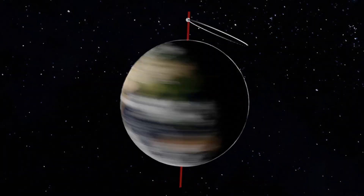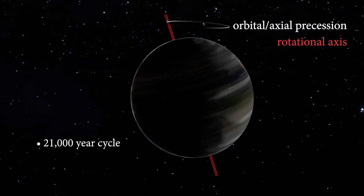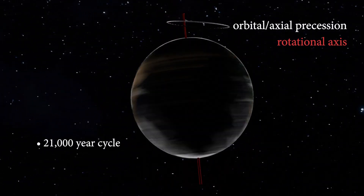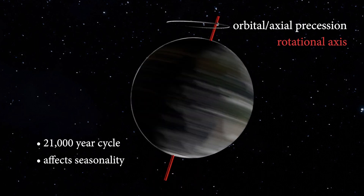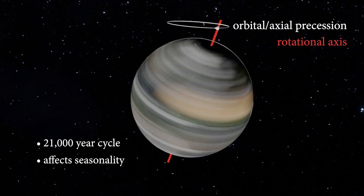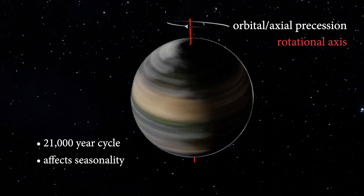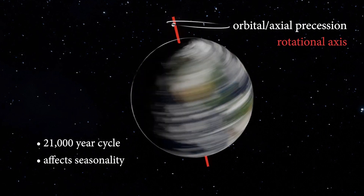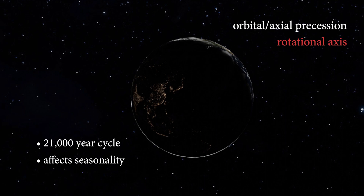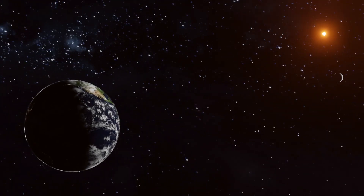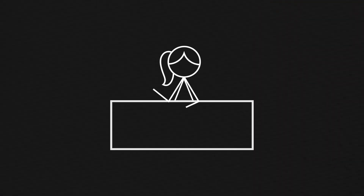Earth's orbital precession, which occurs in an approximately 21,000-year cycle, affects seasonality on Earth. Also known as axial precession, it is a gradual shift in the orientation of the rotational axis of the Earth. This motion is mainly caused by the gravitational forces exerted by the Moon and the Sun on the Earth's equatorial bulge. This wobbling of Earth's axis affected seasonality and energy distribution on Earth, influencing the strength of the African monsoon and vegetation patterns in the Sahara.